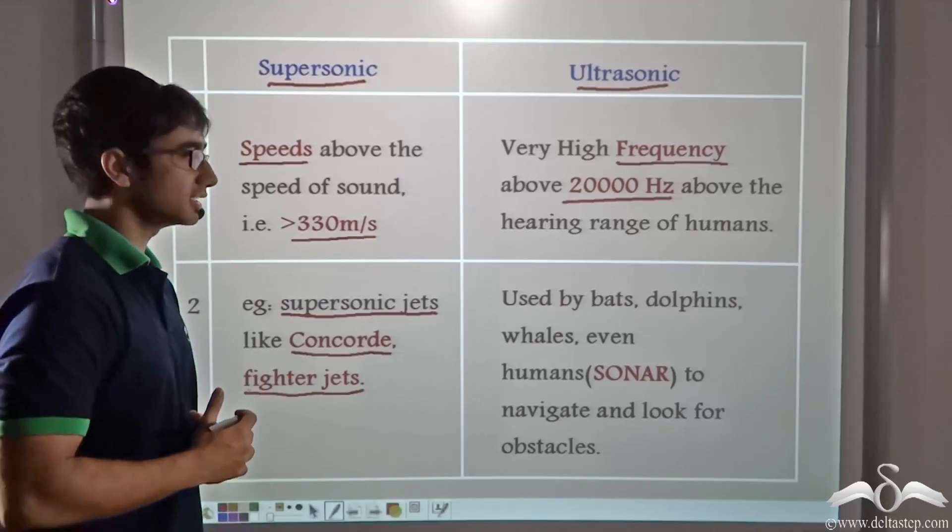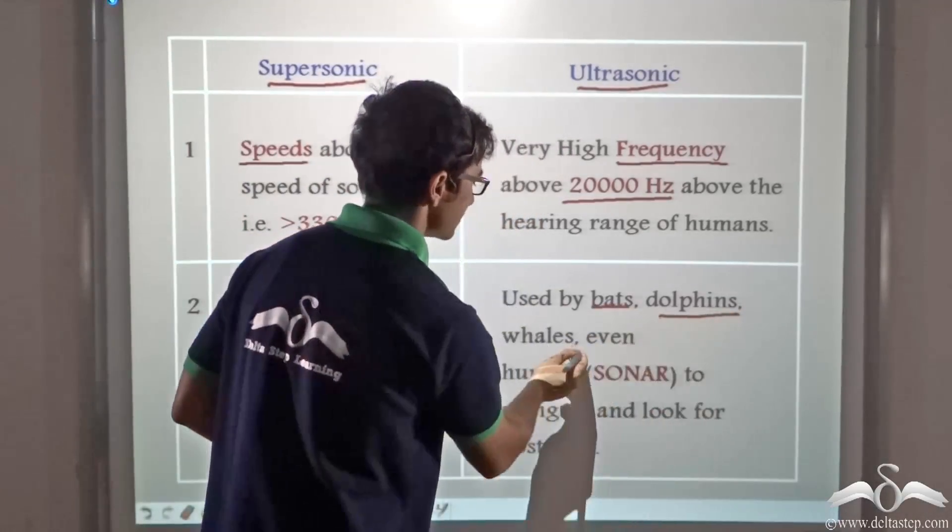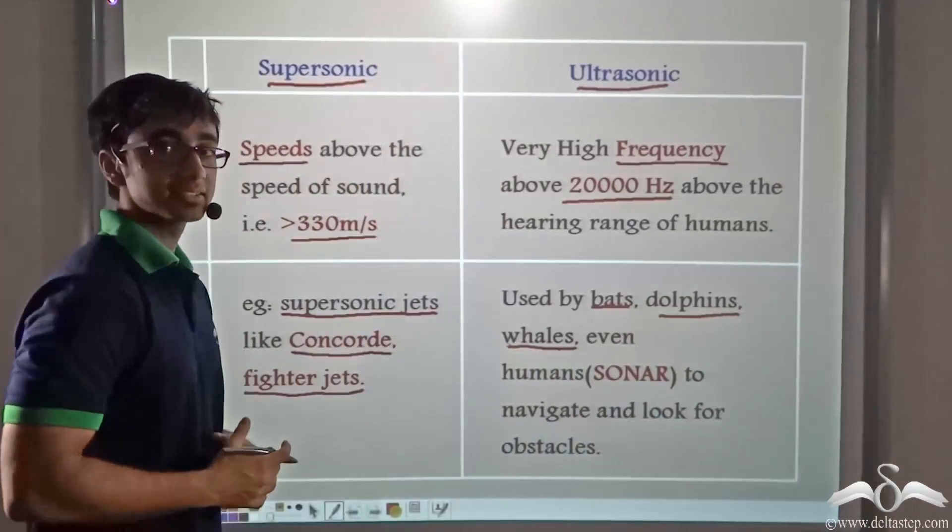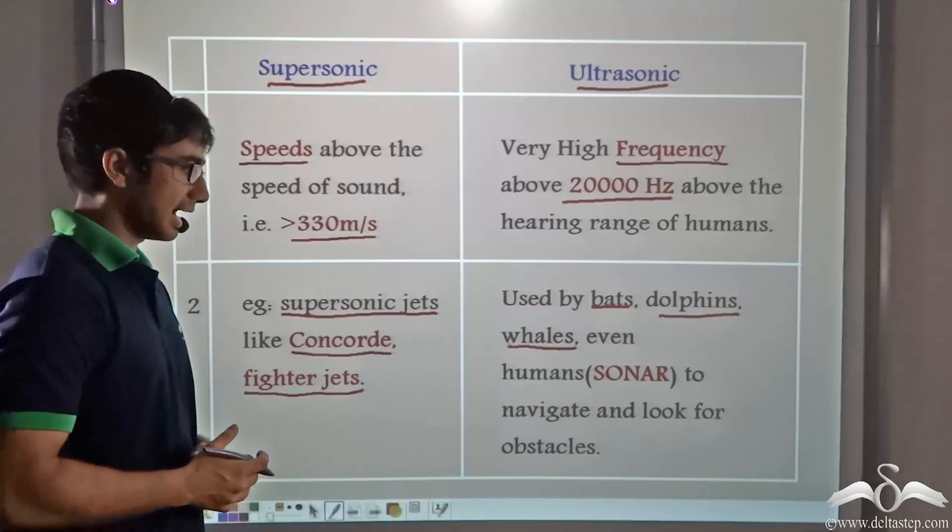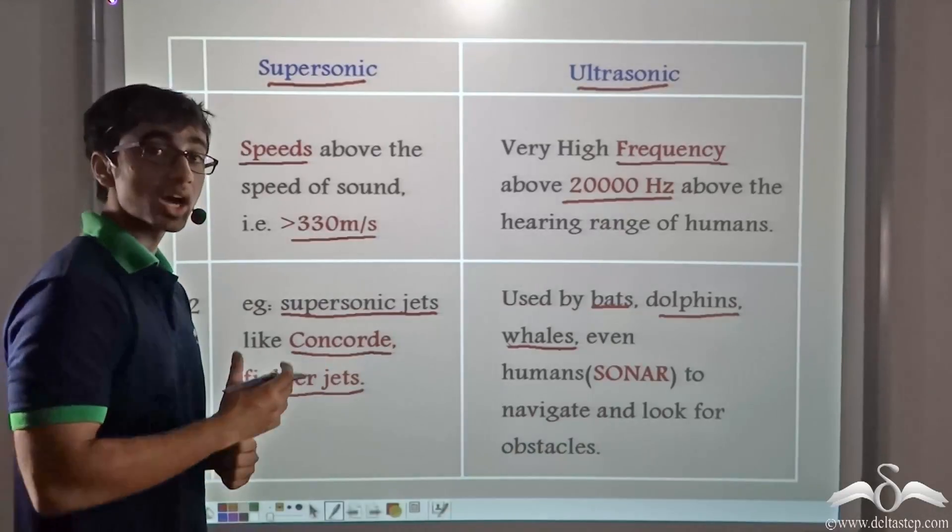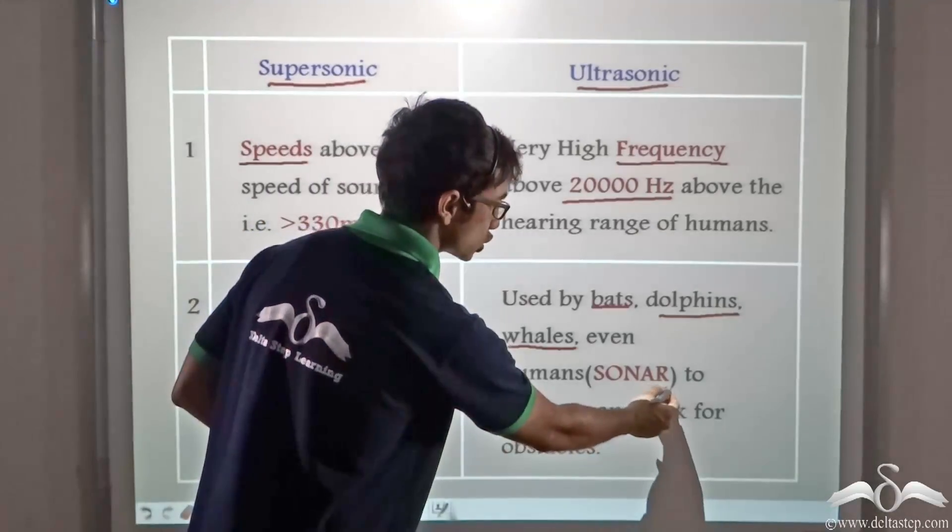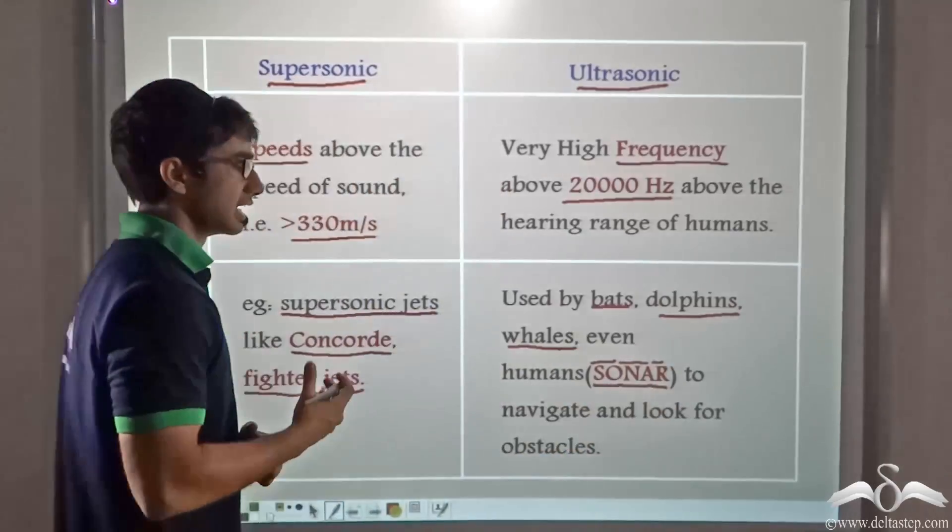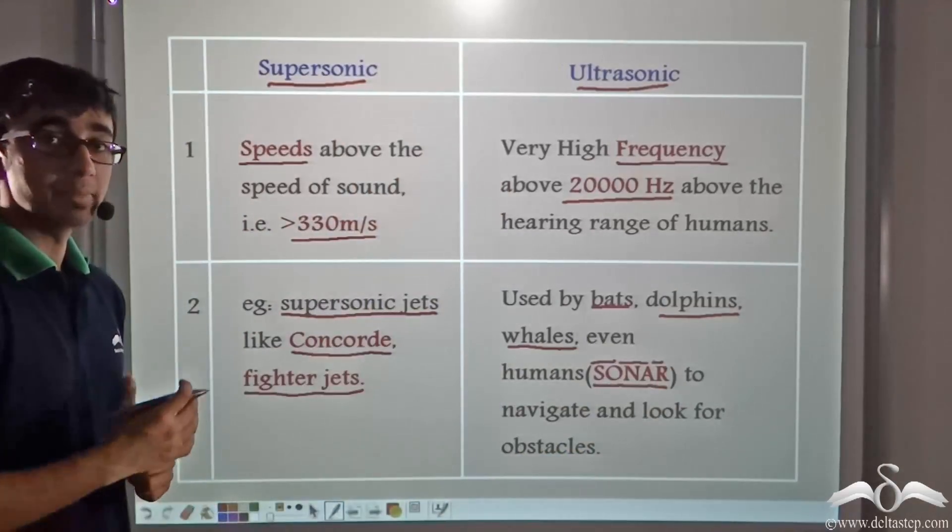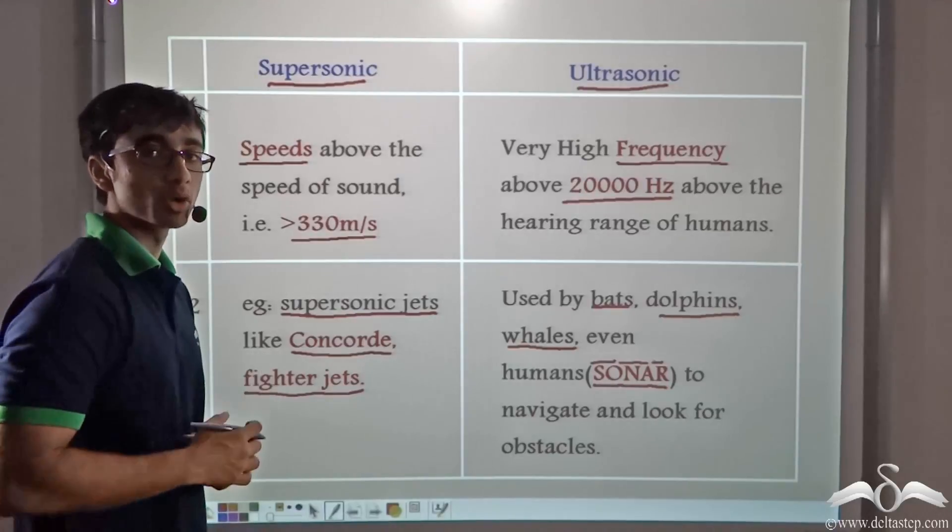Ultrasonic, as we previously learnt, are used by bats and dolphins and animals like whales to detect their prey in the dark or underwater. And ultrasonic waves or ultrasound is also used by human beings in sonar or sound navigation and ranging. It is also used by human beings in medical sciences to detect what is inside the human body.